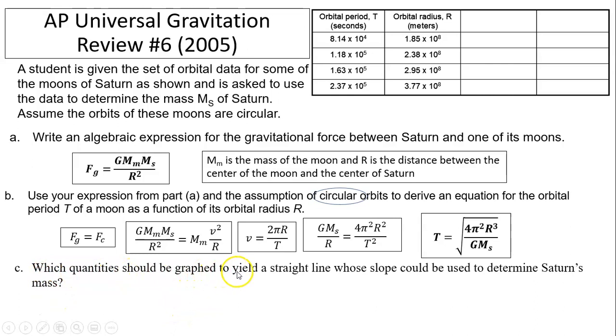Question c: which quantities should be graphed to yield a straight line whose slope could be used to determine Saturn's mass? So here is Saturn's mass, Ms. How can we determine it? So we are given a table, as you can see. One is period, one is radius. So from this mathematical equation, we have to find some kind of linear relationship. We know t is not linearly related to r.